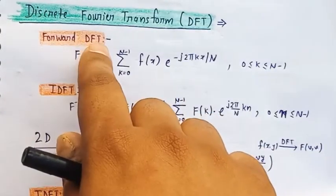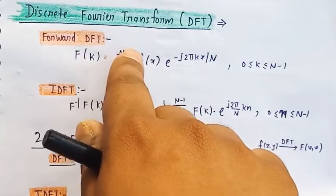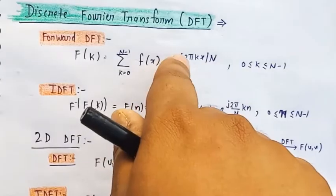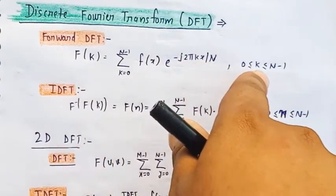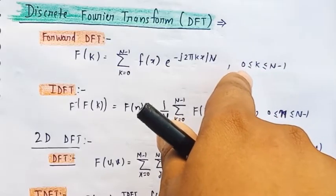In the forward form, DFT is F(k) = sum from k=0 to N-1 of f(x) * e^(-j2πkx/N), where 0 ≤ k ≤ N-1.